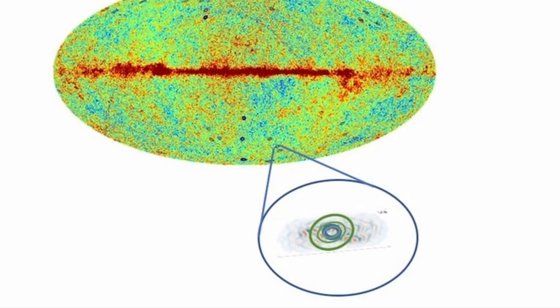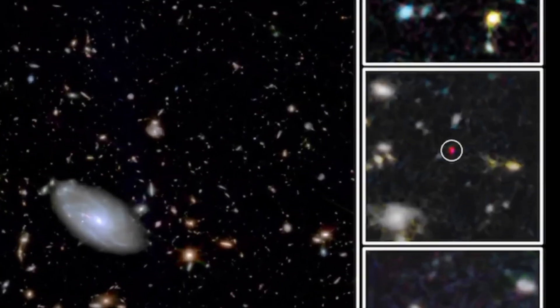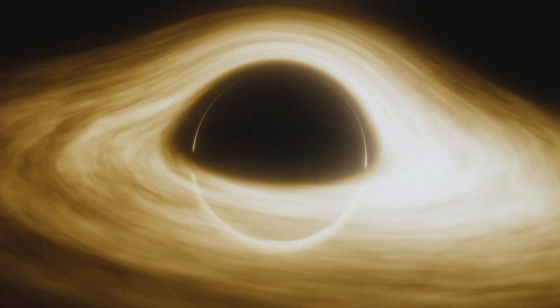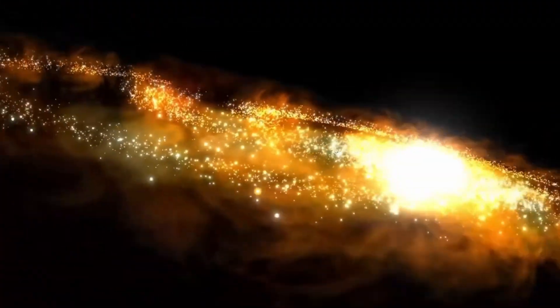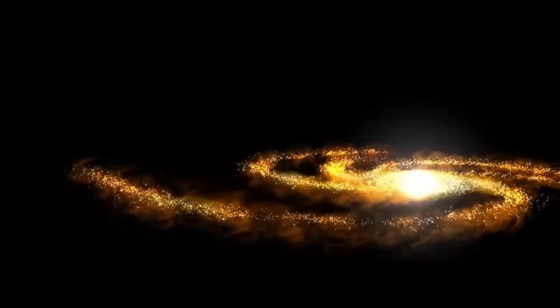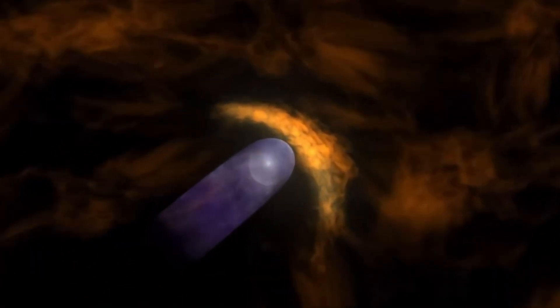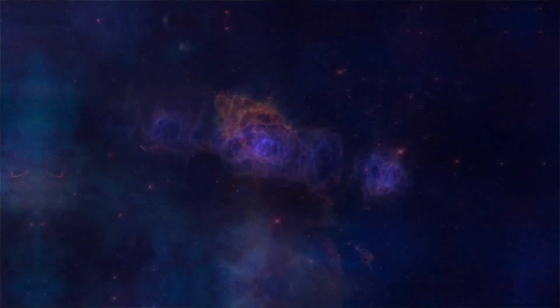To visualize this, imagine drawing an infinite spiral on a sheet of paper. Each loop represents a universe. They're connected yet distinct, their ends blending seamlessly into their beginnings. That's how Penrose envisions reality: not a single timeline, but an eternal, self-renewing rhythm of existence.